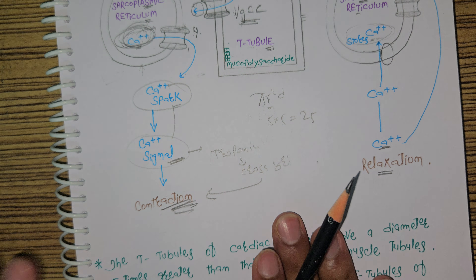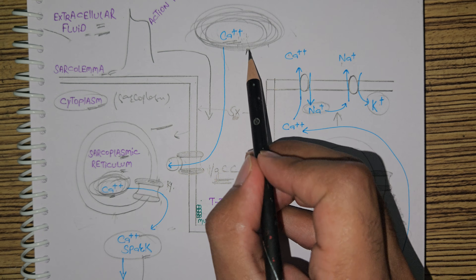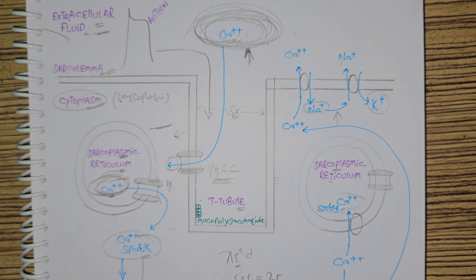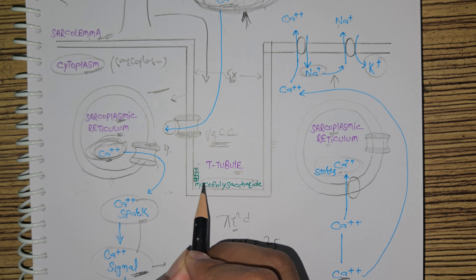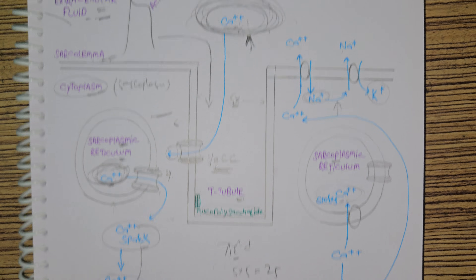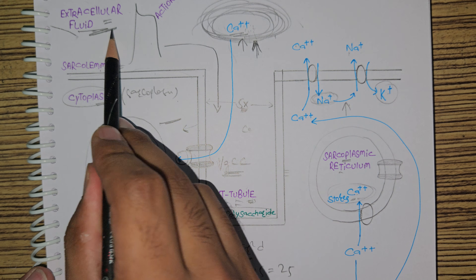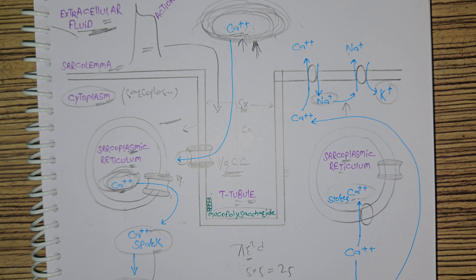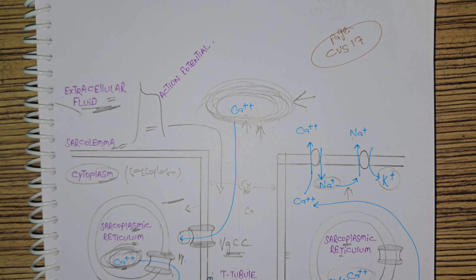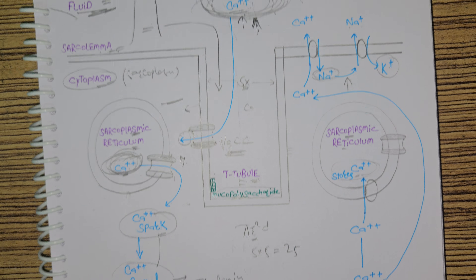For this extracellular fluid calcium to enter the cell, there should be abundant calcium in the extracellular fluid. This is maintained by mucopolysaccharides inside the T-tubules. These mucopolysaccharides are negatively charged and hold the positively charged calcium ions, so there is abundant calcium in the T-tubules — which are part of the extracellular fluid — ready to go inside when the action potential arrives.